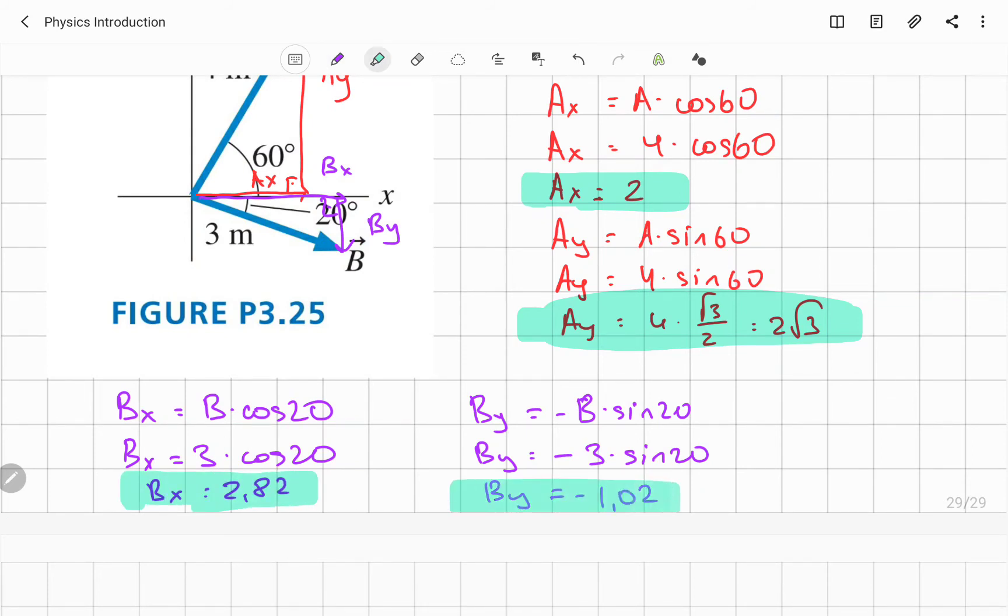So as you see, we have a y component and x component for both vectors. So let me write this Ay in this way. So approximately 3.46.